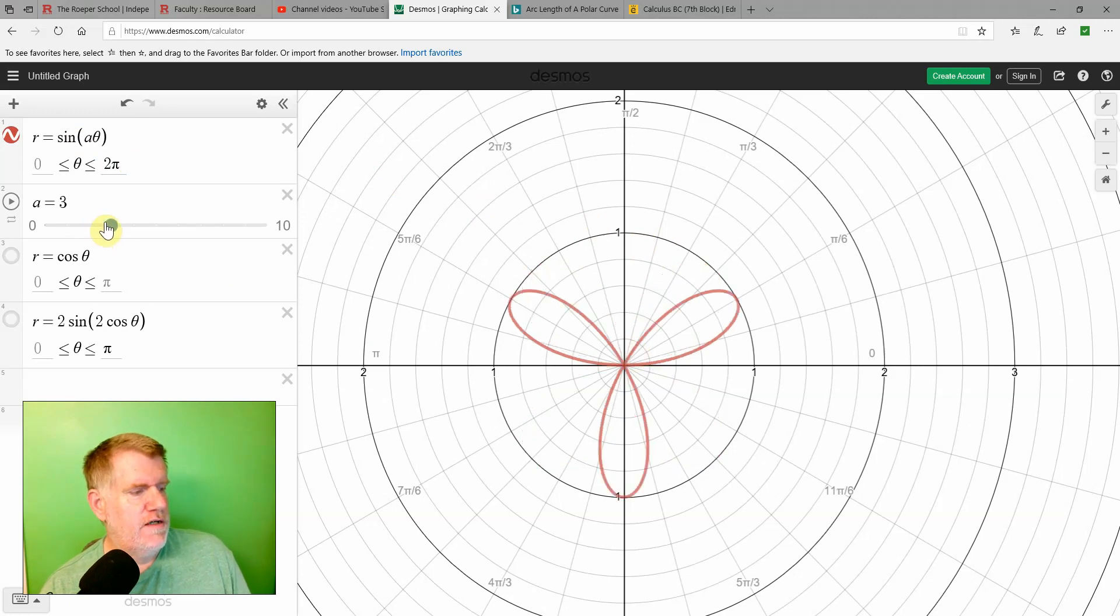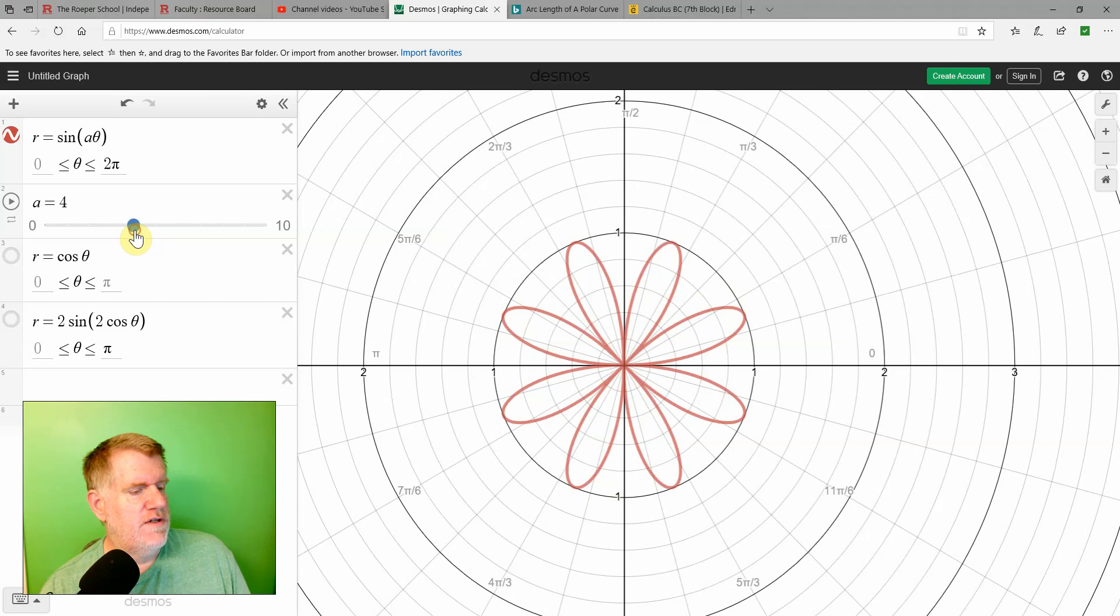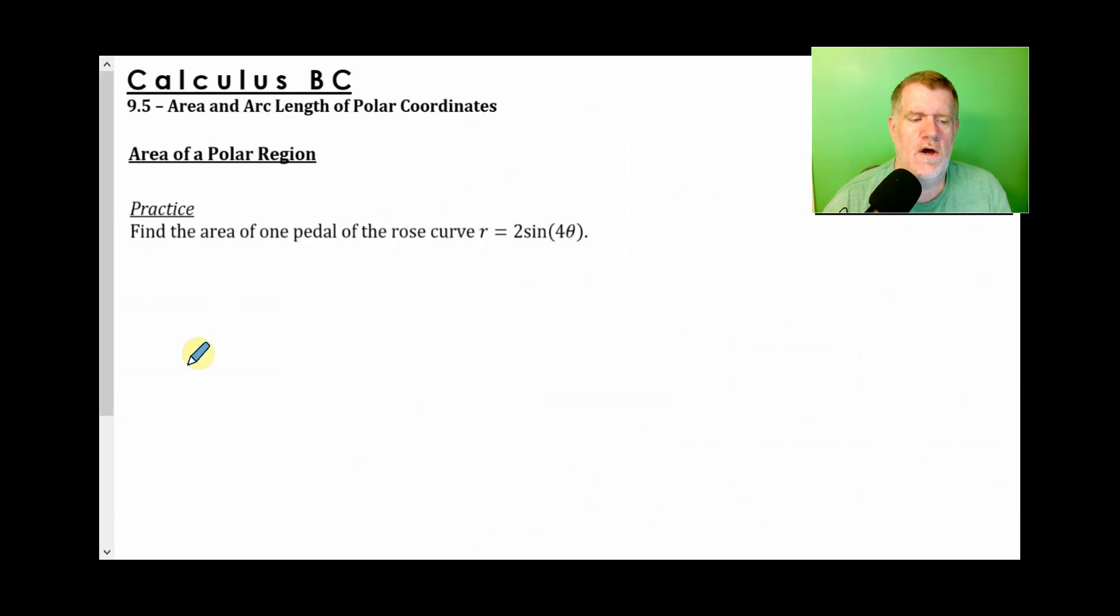When you have three, notice when you have an odd number, the petals are the same as the A value. When it's an even number, you have double the petals. Now how do we find the area of one petal of this rose curve?